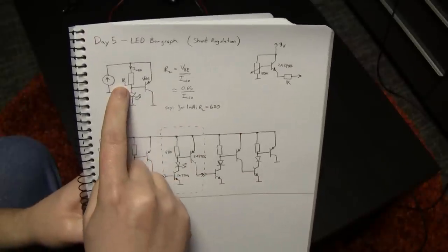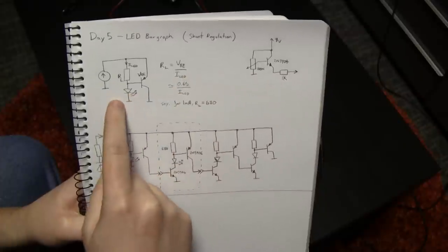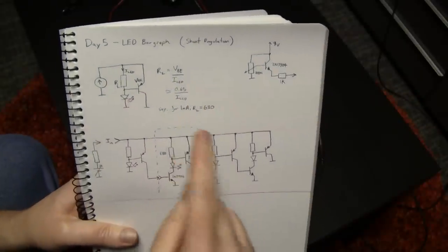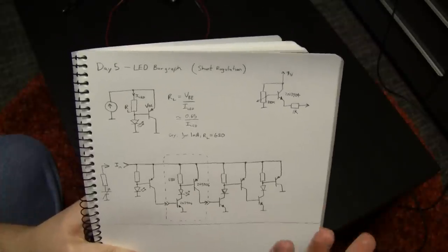Calculating this resistor value is relatively simple. It's equal to the VBE divided by the current, the maximum current that you want through the LED. If you take, say, 0.65 for the VBE, the VBE is obviously process dependent, temperature dependent, a whole bunch of other stuff.